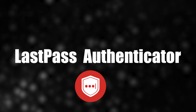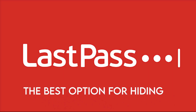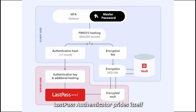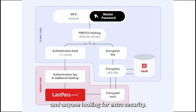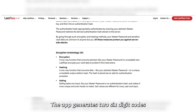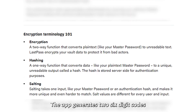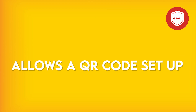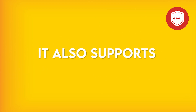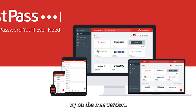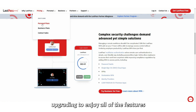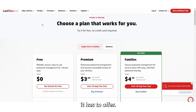LastPass Authenticator is the best option for hiding extra-sensitive information. It prides itself on military-grade encryption, making it perfect for banks and anyone looking for extra security. The app generates two six-digit codes every minute, supports SMS codes, allows QR code setup, and supports other TOTP-compatible apps. Most people will get by on the free version; however, it's worth upgrading to enjoy all the features it has to offer.